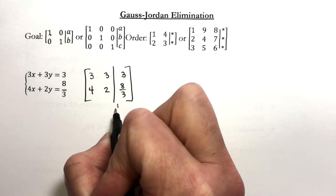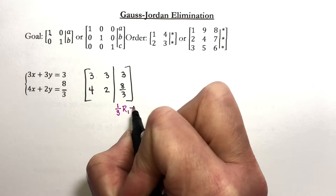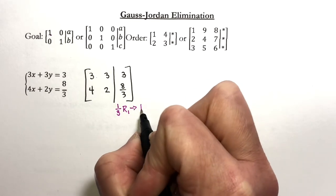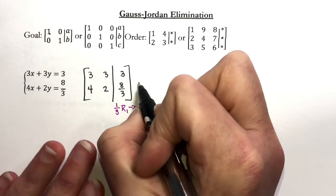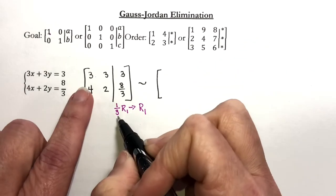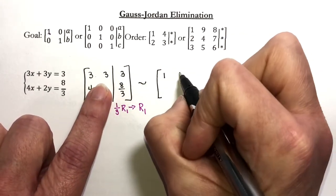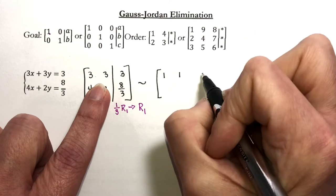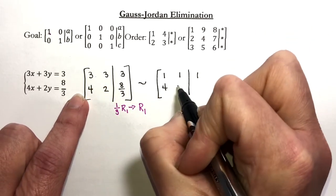So what I'm going to do is I'm going to take one third and multiply row one by that, and then I'm going to rewrite it. I'm going to replace it where I'm going to write it where row one is now. Now remember these are row equivalent. One third times three is one. One third times three is one. One third times three is one. And then I did not change my second row.